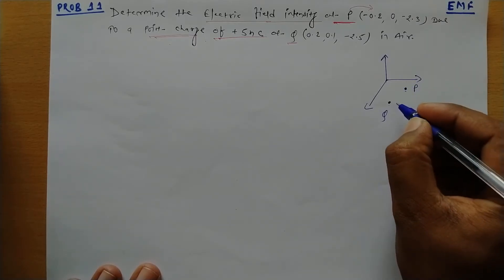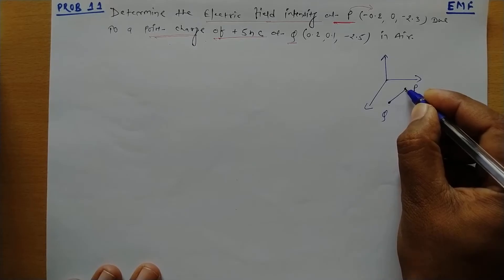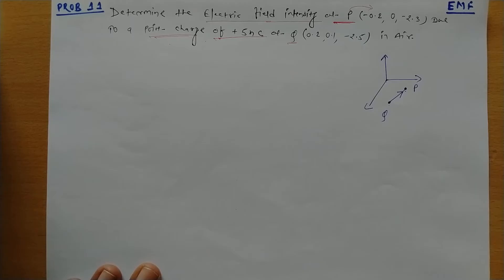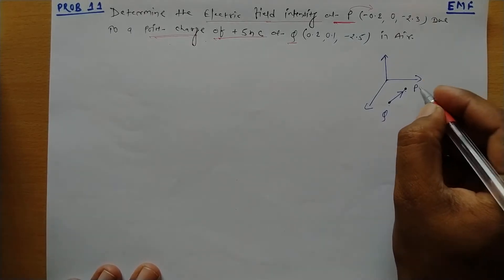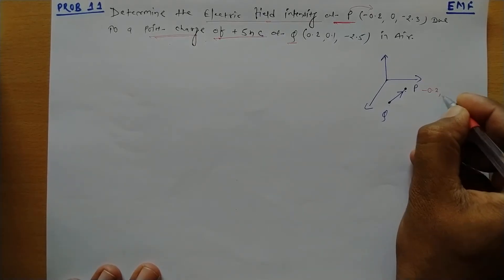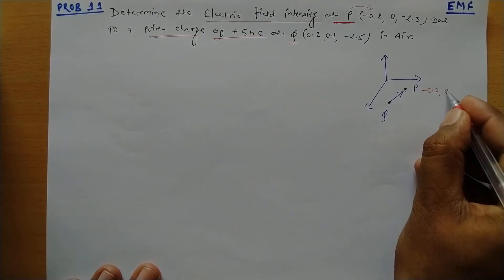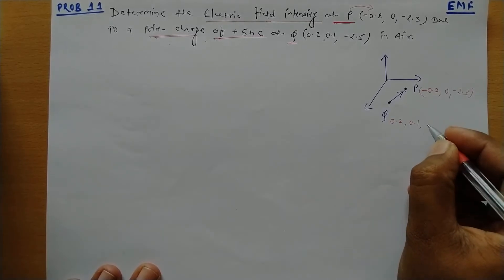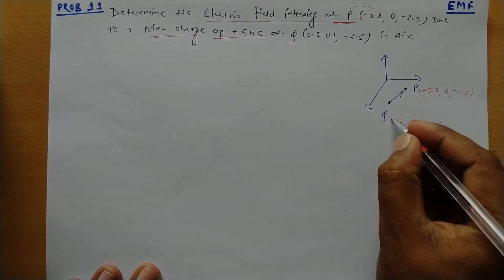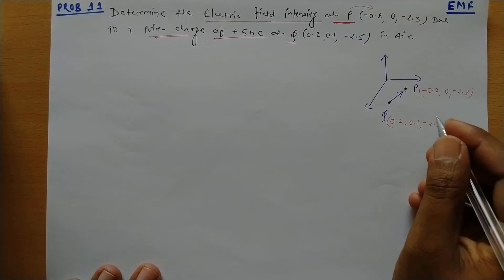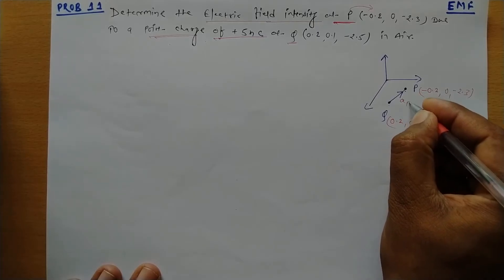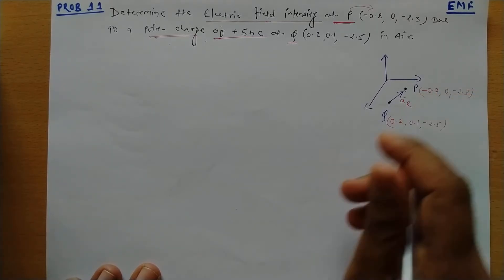So basically, we need to find the intensity at point P due to the point charge placed at Q. The coordinates of point P are (-0.2, 0, -2.3) and the coordinates of point Q are (0.2, 0.1, -2.5). We can define the direction as AR.